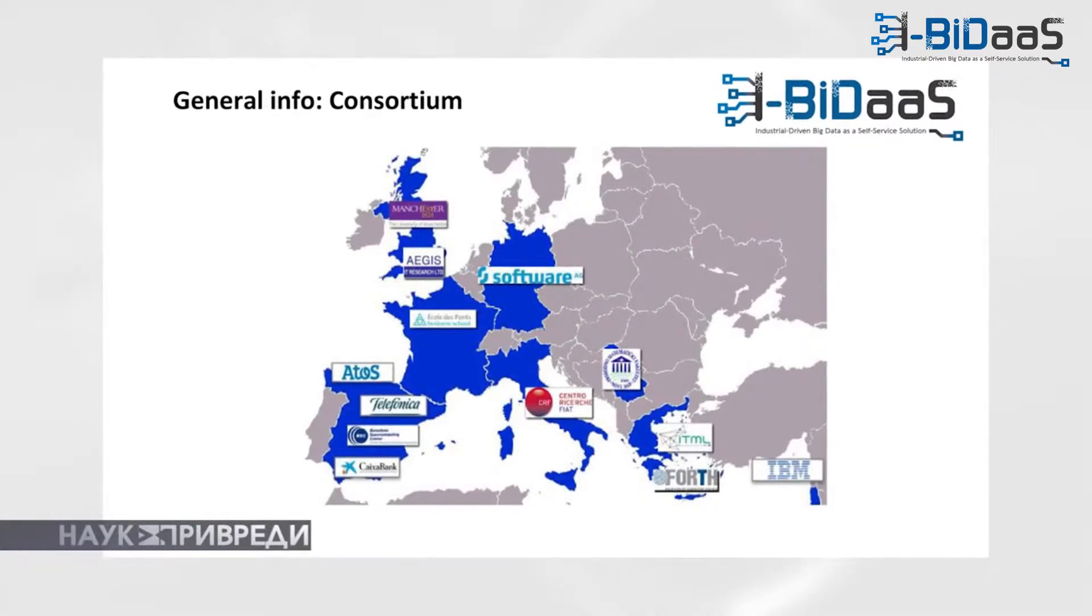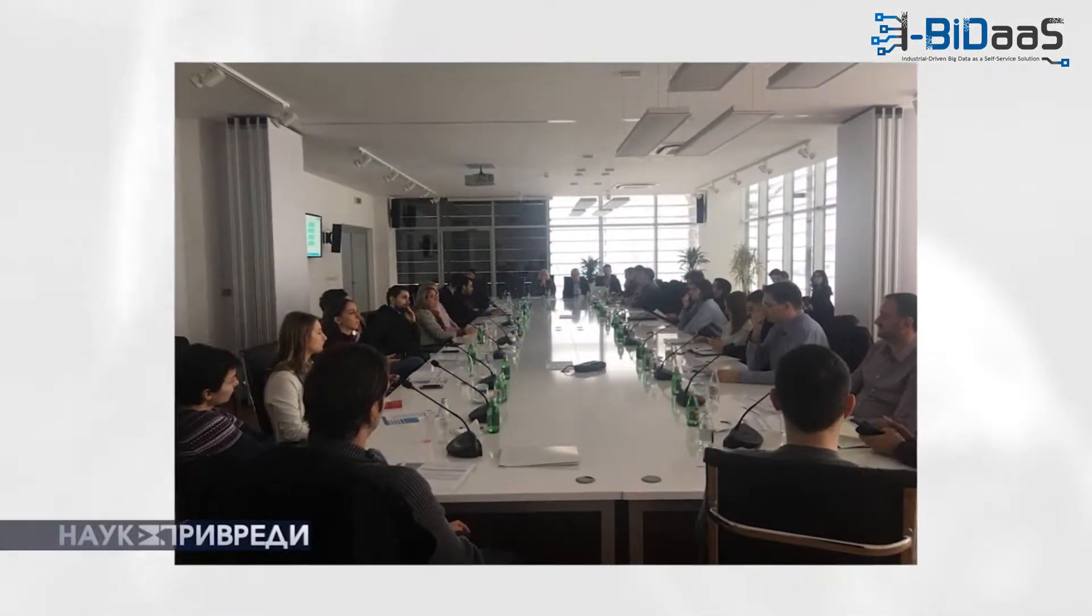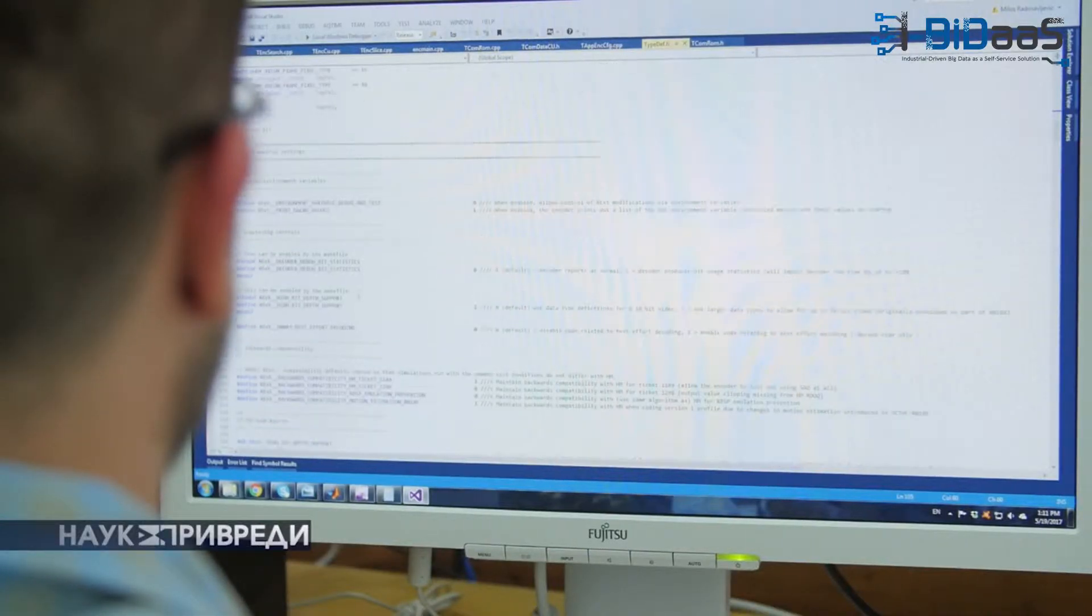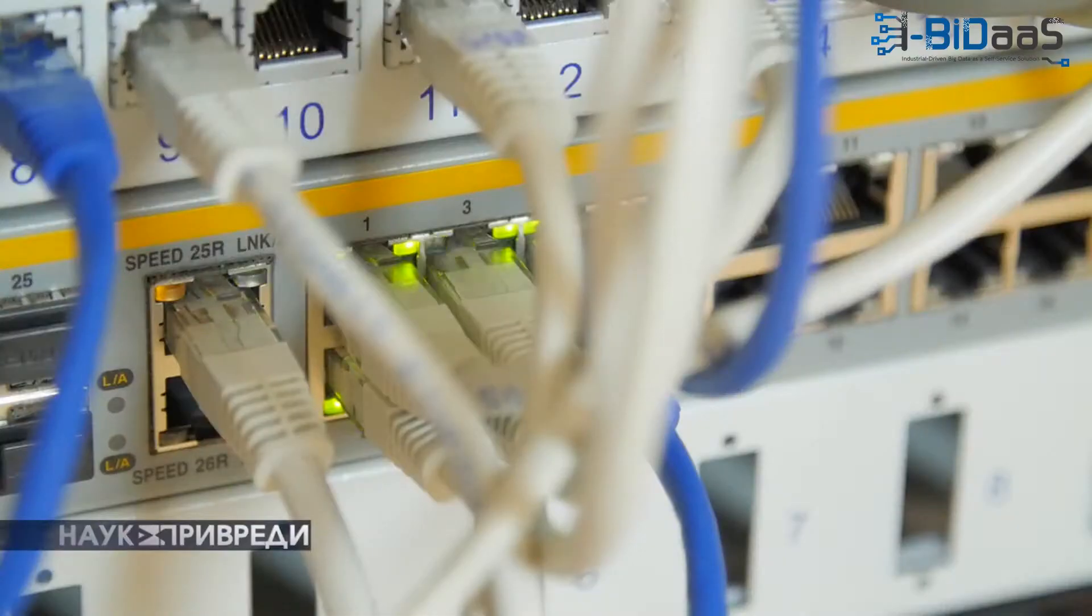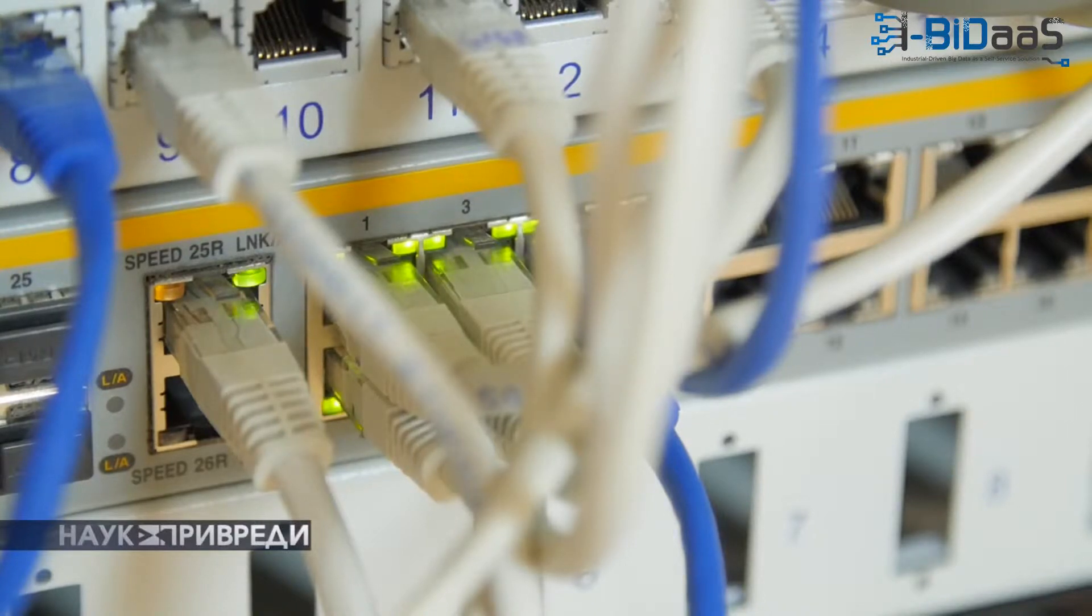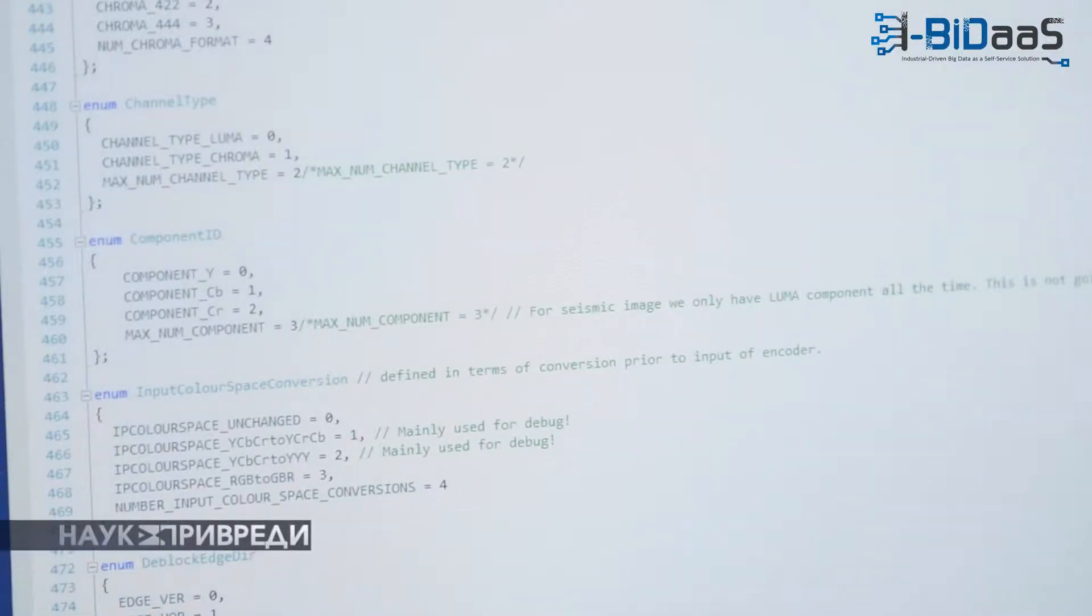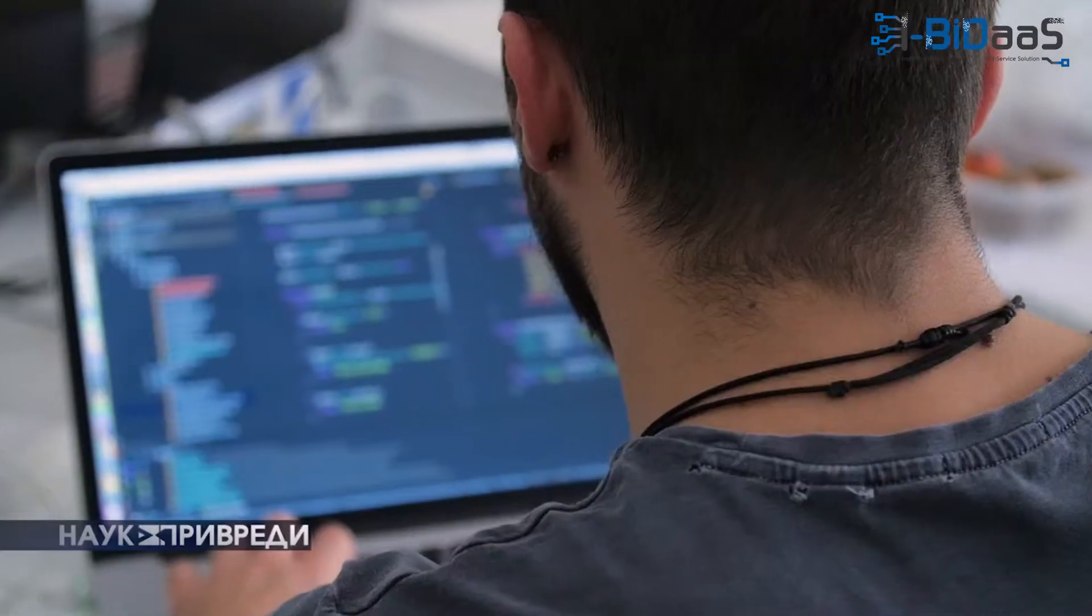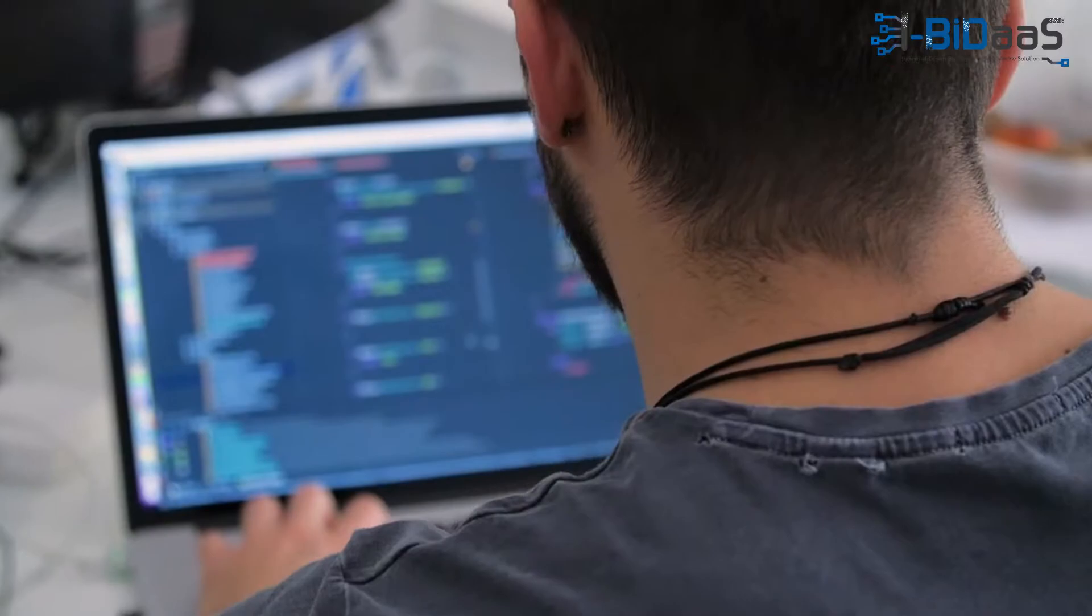The IBIDAS project organized at the end of January an information day workshop, where it gathered a group of companies dealing with data science and big data from Novi Sad, Belgrade and the region. It also gathered companies that can be potential users of the IBIDAS platform, all with the aim to get feedback about what are the next steps, what functionalities of the platform we need to add, etc.